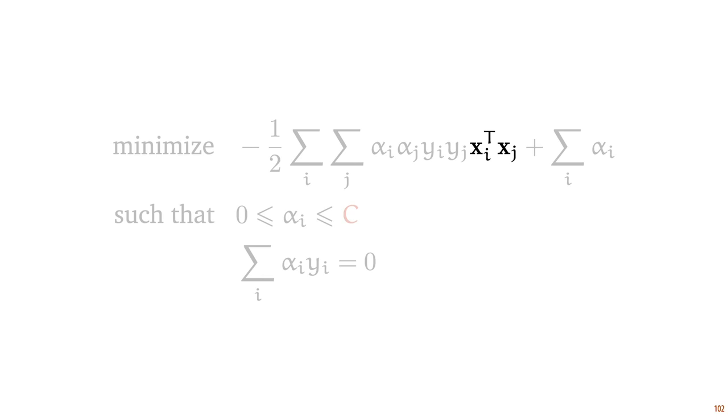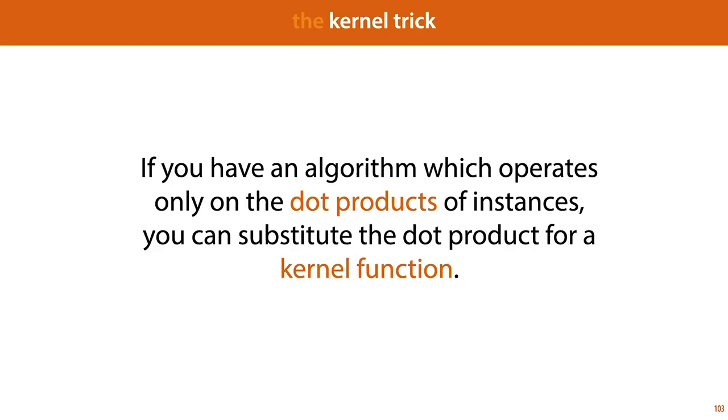Any instance for which the corresponding alpha is not zero is a support vector or ends up inside the margin. The second thing to notice is that the algorithm only operates on the dot products of pairs of instances. In other words, imagine that you didn't have access to the data, but I did give you the full matrix of all dot products of all pairs of instances, then you would still be able to find the optimal support vectors. And this allows us to use a very special trick. Imagine if I gave you, instead of a matrix of dot products, a different matrix of values that behaved like a matrix of dot products. This is the kernel trick.